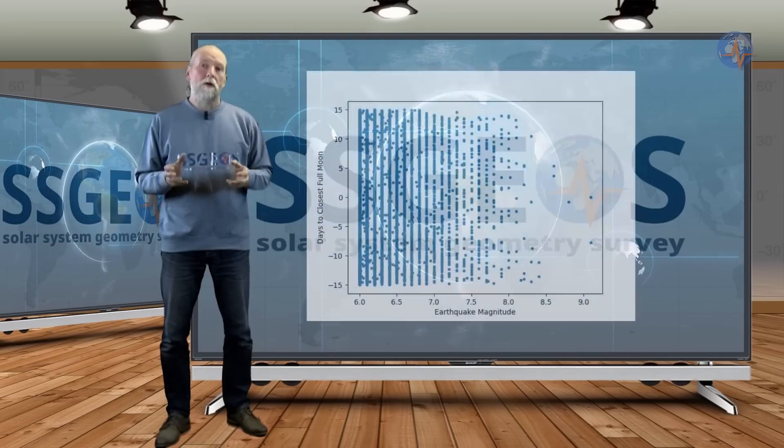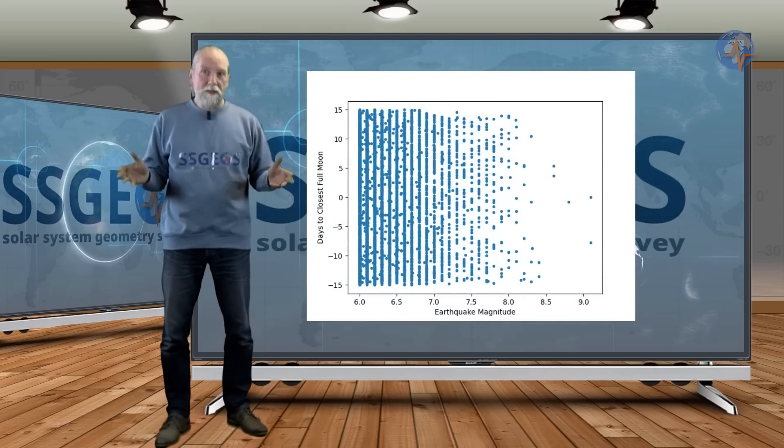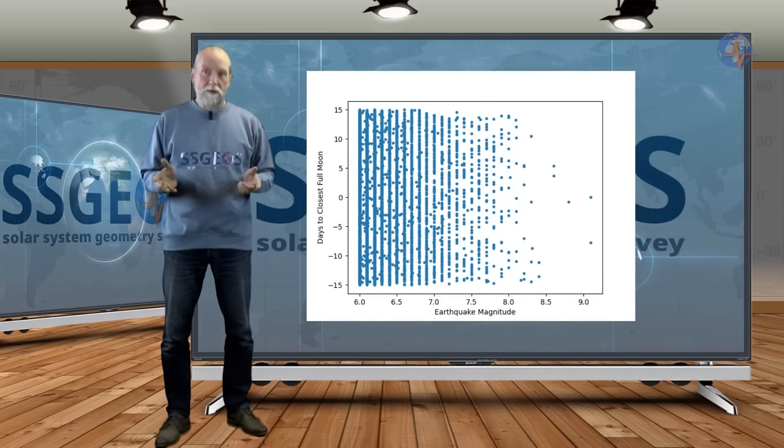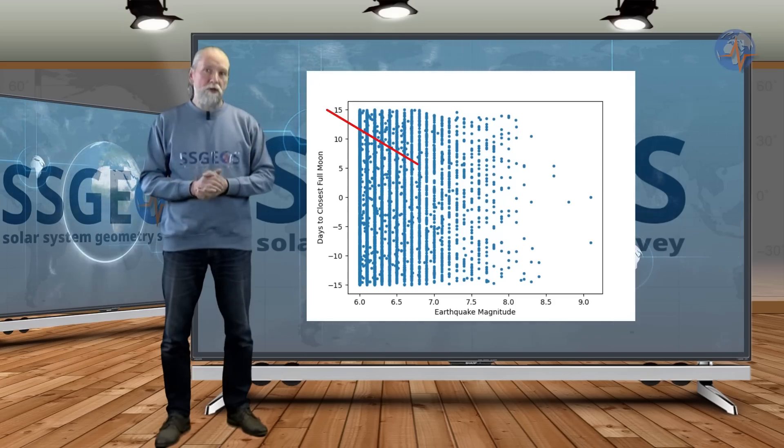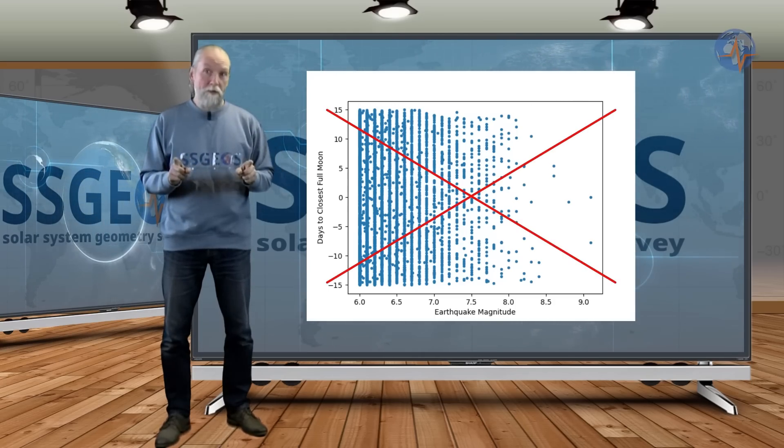So an analysis of every full moon over a number of years may be interesting to prove that there is no correlation. But if you include the planetary positions, it becomes a completely different analysis and you cannot possibly compare the two.